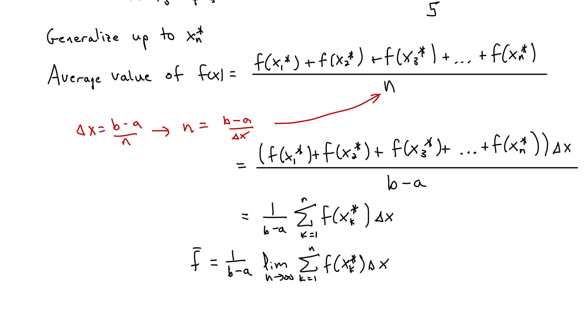But note that this is exactly the definition of the definite integral of f(x). So we have 1 over b minus a, integral from a to b, f(x) dx. And this expression gives us the exact value for the average of the function f(x) over the interval a to b.